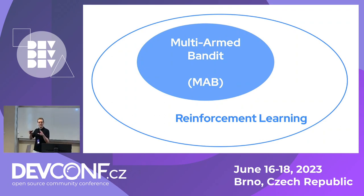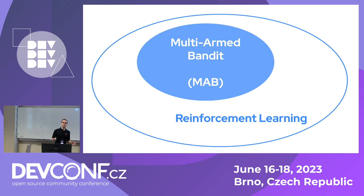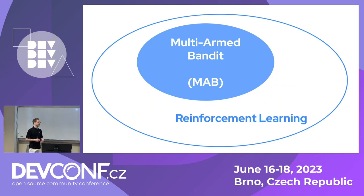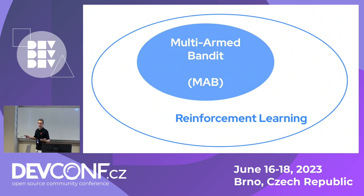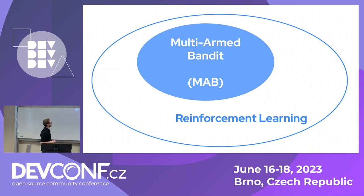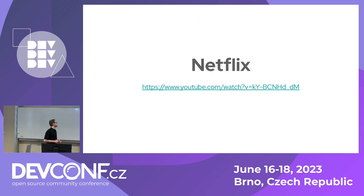It's a weird name — you can Google the historical reasons. They are part of a bigger family called reinforcement learning, which has become more popular in recent years thanks to projects like DeepMind from Google, or ChatGPT itself, which uses reinforcement learning to improve the quality of its answers.